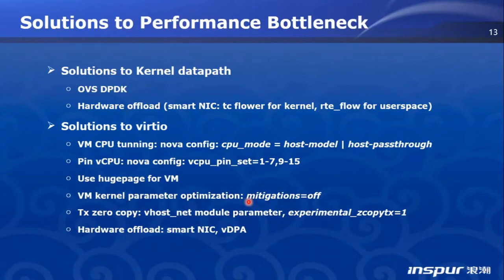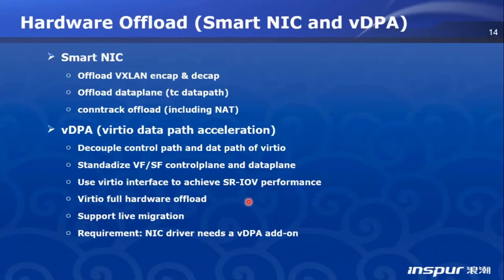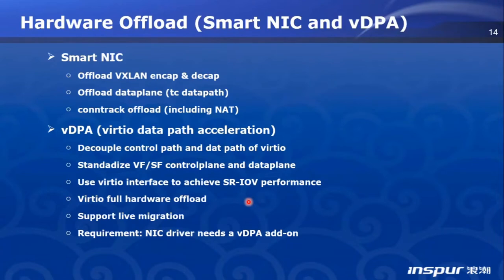VDPA is the acronym for VirtIO Data Path Acceleration. It is specially used to accelerate VirtIO by hardware. A SmartNIC with VDPA capability is exactly such a hardware device. SmartNIC can offload VxLAN encap, decap, and TC datapath. SmartNIC can offload connection tracking (CT) — for example, the Mellanox ConnectX-6 DX — and it can also offload NAT (network address translation). VDPA decouples the VirtIO control plane and data plane, and standardizes the VF or SF control plane and data plane. This is really a huge technical progress.